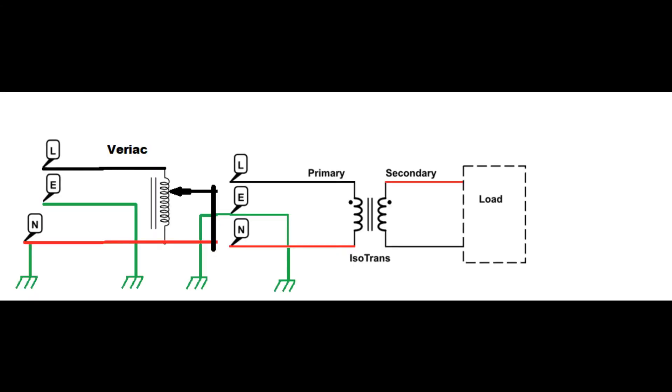So let's do a hookup of the variac and then isolation transformer, then the load. So as you can see here, my variac and my isolation transformer all have a reference to ground, but on the other side of the isolation transformer, I have no reference to ground.